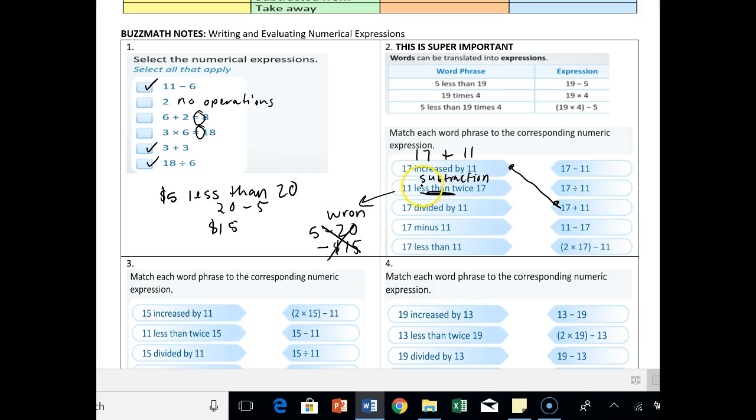So the less than really is kind of, you almost want to take this number, draw an arrow and put it behind the number, the second number that it says in the expression. So it says 11 is less than twice 17. You want to do twice 17, 2 times 17, minus 11.